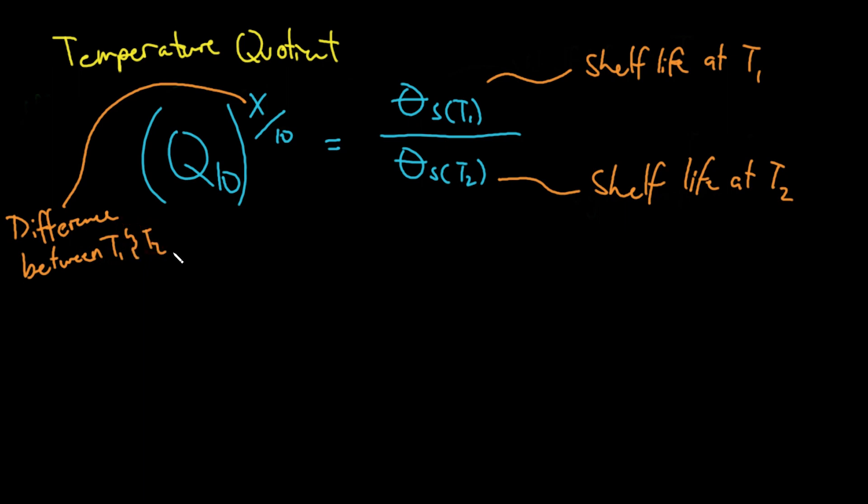When using this equation, we normally assign temperature 2 as the higher one. So for example, if you have 10 degrees Celsius and 15 degrees Celsius, 15 degrees Celsius would be your T2. You might also encounter this equation in other books where the term 'shelf life' is replaced by 'reaction rate,' giving reaction rate at T1 over reaction rate at T2 — they are used similarly and it's completely fine.